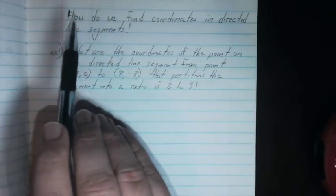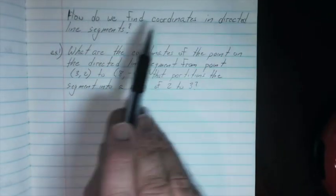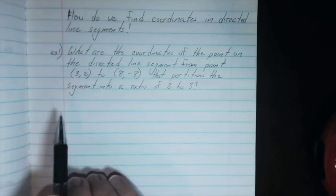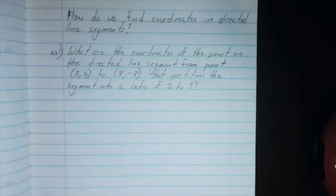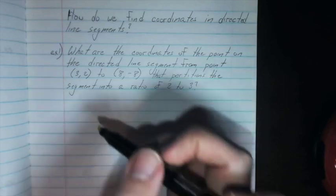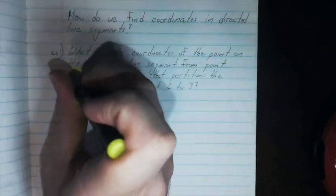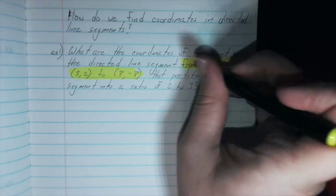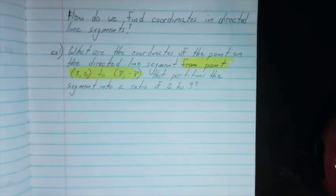All right, so our aim today is how do we find coordinates in directed line segments? And all a directed line segment is, is it's a line segment specifically from one point to another. So read our first example. Now we can tell that this is a directed line segment. It has a direction because it's going from that first point to the second. It's starting here, it's ending there. That's an important part about directed line segments.